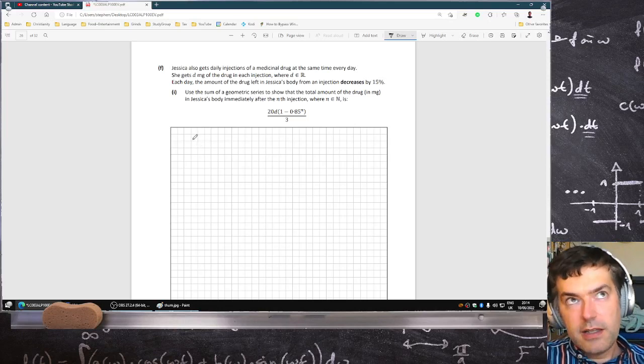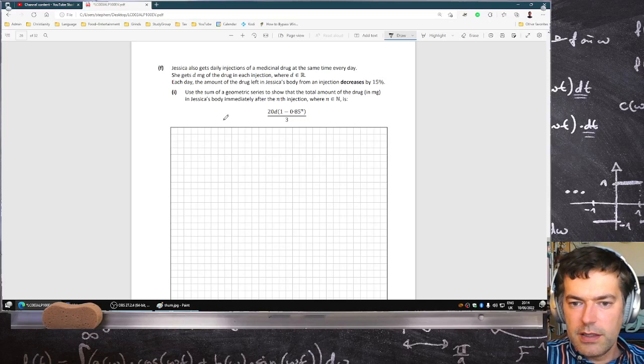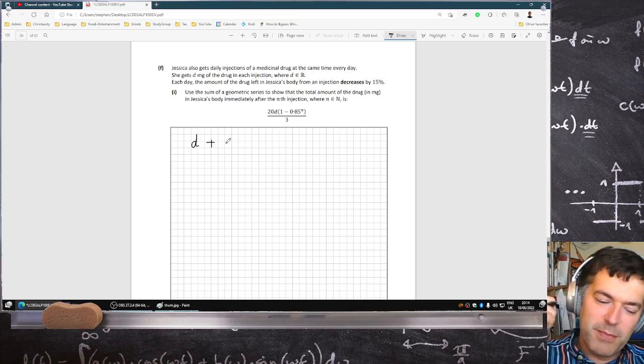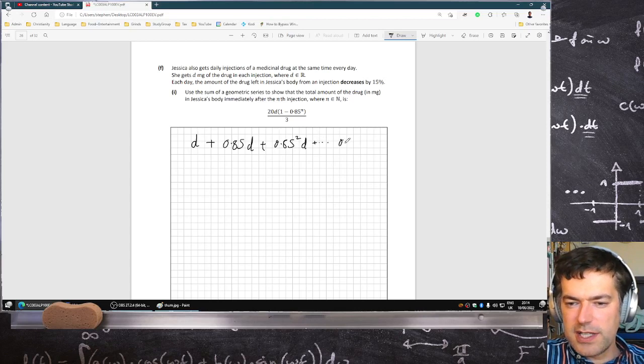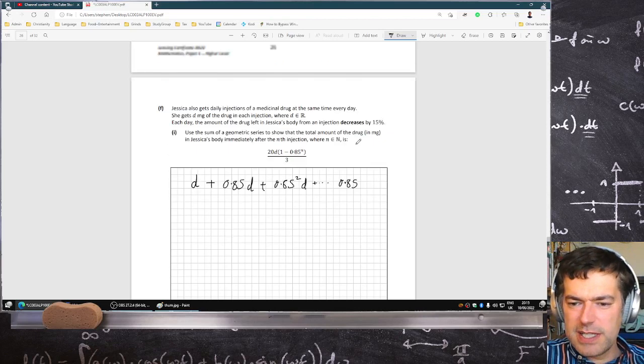So today she would have D, but then from yesterday's dose it'd be 0.85 D and then 0.85 squared D, et cetera, et cetera, all the way to 0.85.